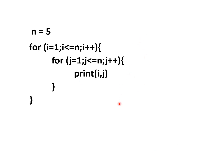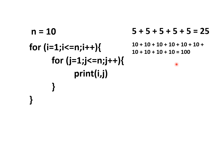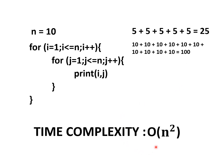Here we have two nested for loops, each running from 1 to n. When n equals 5, the inner loop runs 5 times for each of the 5 outer iterations, so the print statement executes 25 times. When n equals 10, it runs 100 times. The time complexity varies by n squared, so the time complexity is O(n²).